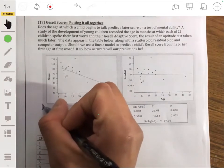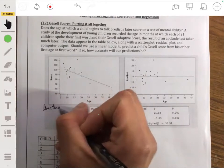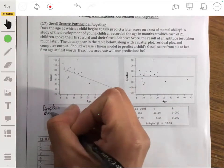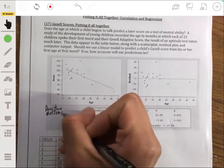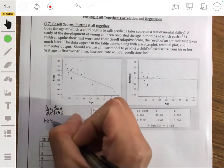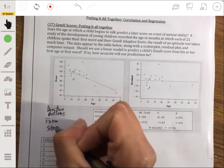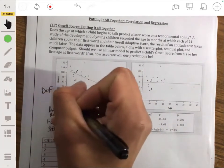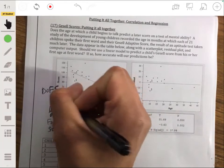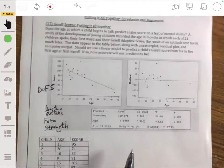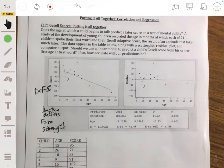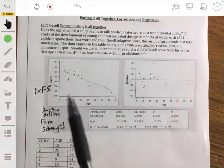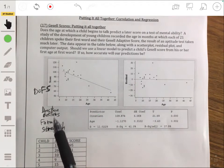So when we have a scatter plot, we're going to need to describe it by mentioning four factors. These are going to be the direction, we're going to need to mention if there are any outliers, you're going to need to mention the form and the strength. I remember I called this DOFS, mention the DOFS. This is not going to be told to you explicitly on your tests or on your AP exam. You're going to be told to describe the data to make sure you mention direction, outliers, form, strength.